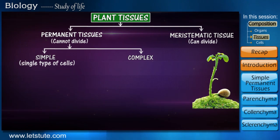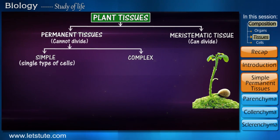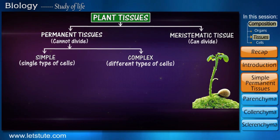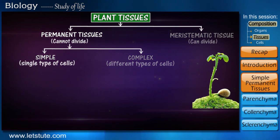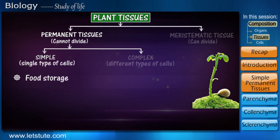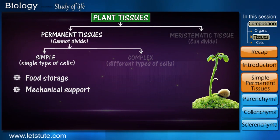There are two types of permanent tissues: simple permanent tissues and complex permanent tissues. Tissues composed of only one type of cell are called simple tissues, while those made up of two or more types of cells are called complex tissues.